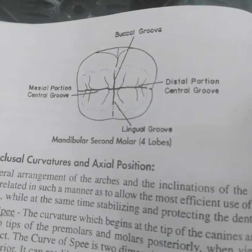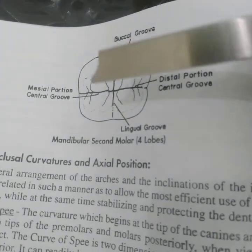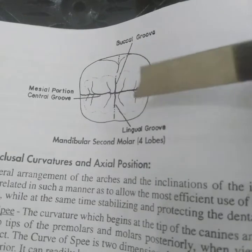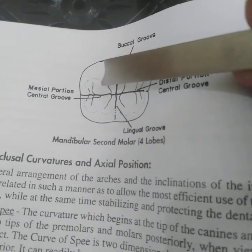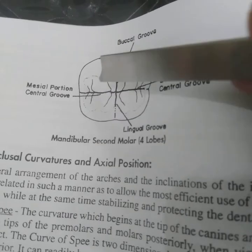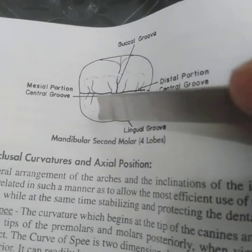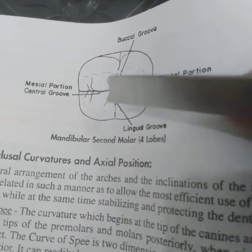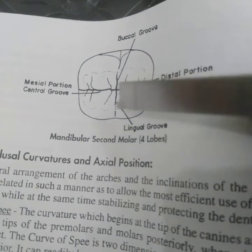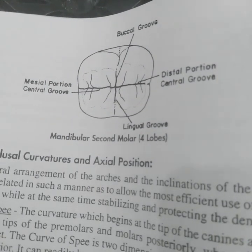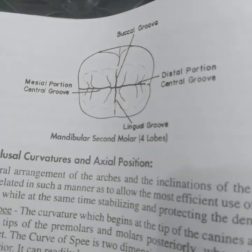The mandibular second molar has four lobes: the mesiobuccal lobe, the distobuccal lobe, the mesiolingual lobe, and the distolingual lobe. The mesiobuccal and distobuccal lobes are separated by the buccal groove. The two buccal lobes and the two lingual lobes are separated by the central groove. The mesiolingual and distolingual lobes are separated by the lingual groove. That was all about the lobes.